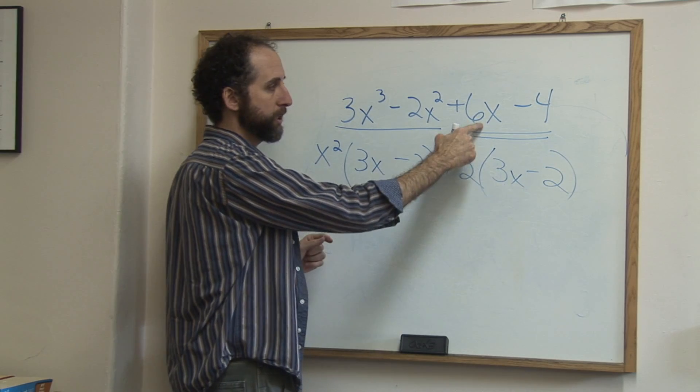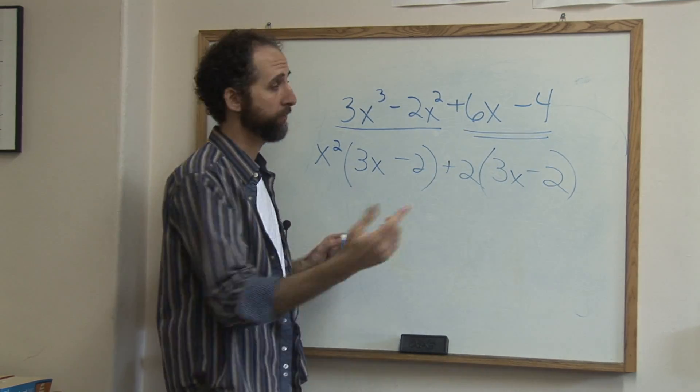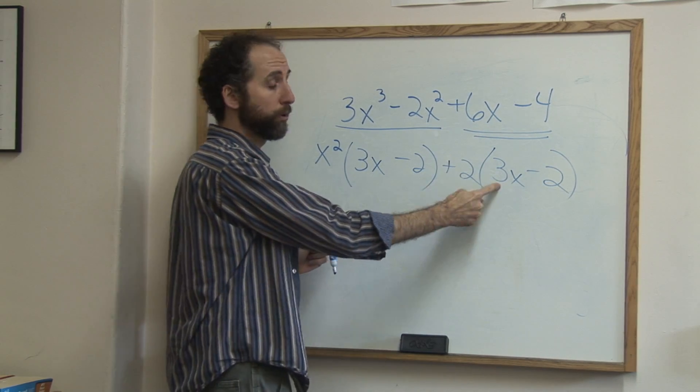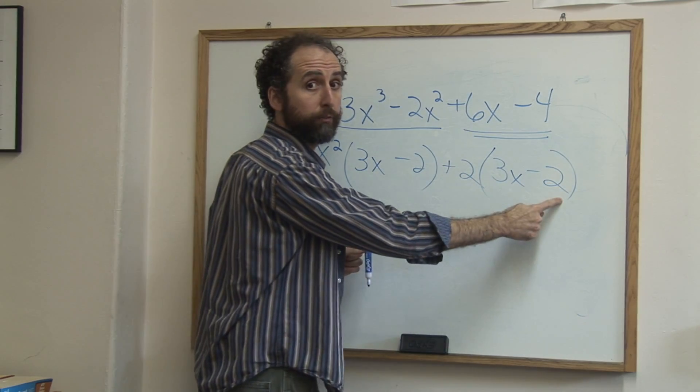Because 2 times 3x is 6x, 2 times negative 2 is negative 4. Another way to think of it is 6x divided by 2 is 3x, 4 divided by 2 is 2, or negative 4 divided by 2 is negative 2.